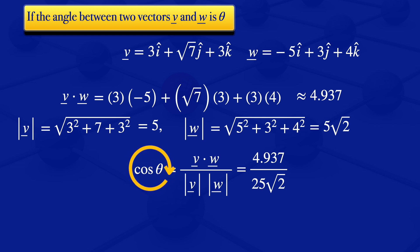We now need the value of theta, so we take the inverse. So theta equals cosine inverse of 4.937 divided by 25 root 2, and that inverse gives us a value which is approximately 82 degrees. So that's the angle between the vectors V and W.